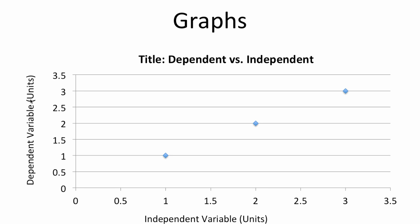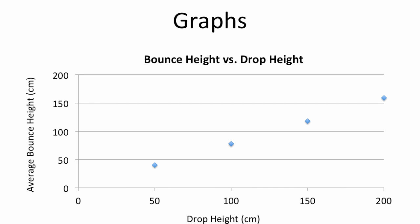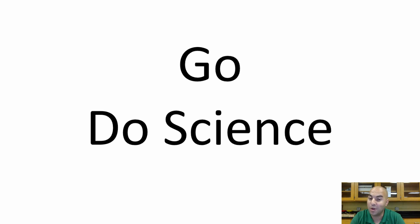Here's what a graph looks like taken from the data table for bounce height versus drop height. Drop height — my independent variable — is measured on the x-axis with its units. Over here on the vertical axis, I have my average bounce height, measured in centimeters. Then I can plot that and get a feel for the trend that's going on. I hope that helps you understand how to use the independent and dependent variables to make data tables and graphs. Let me know if you have any questions.